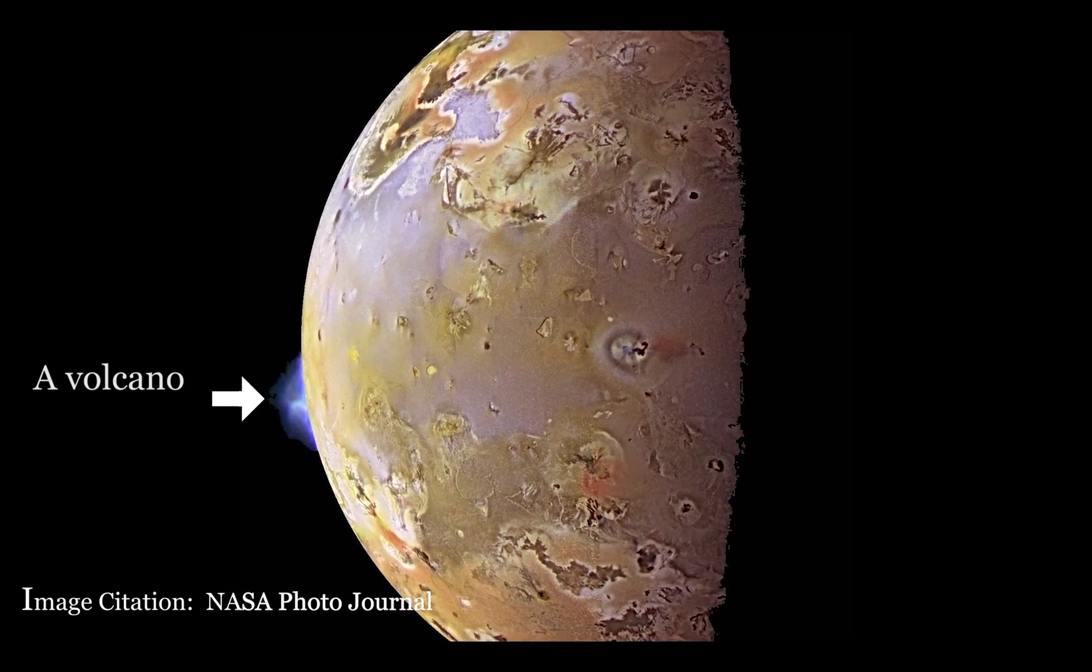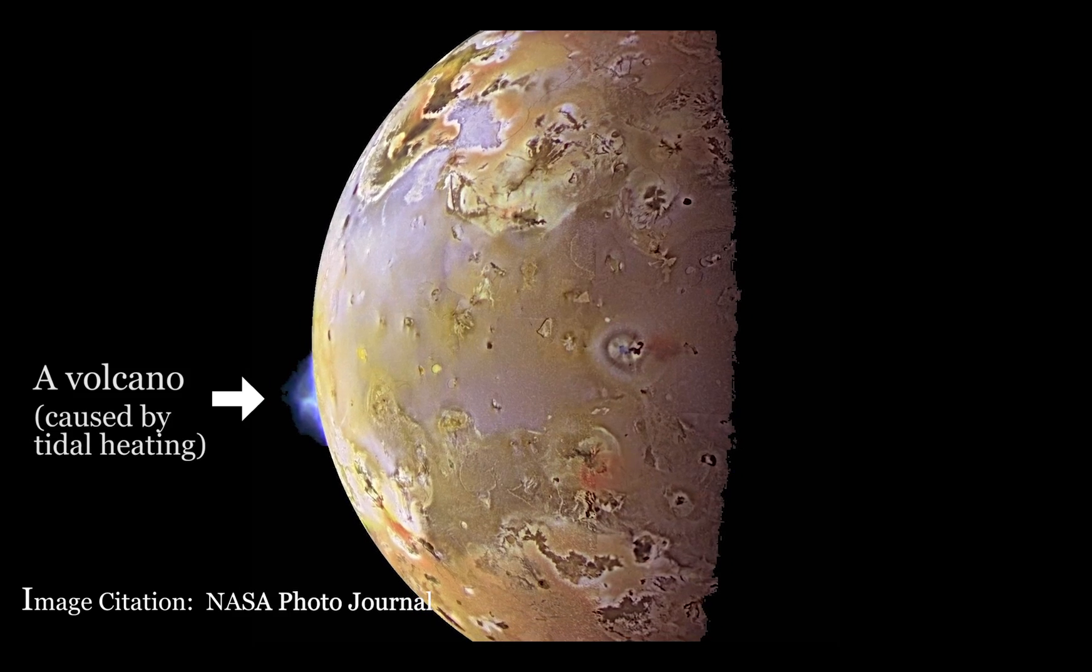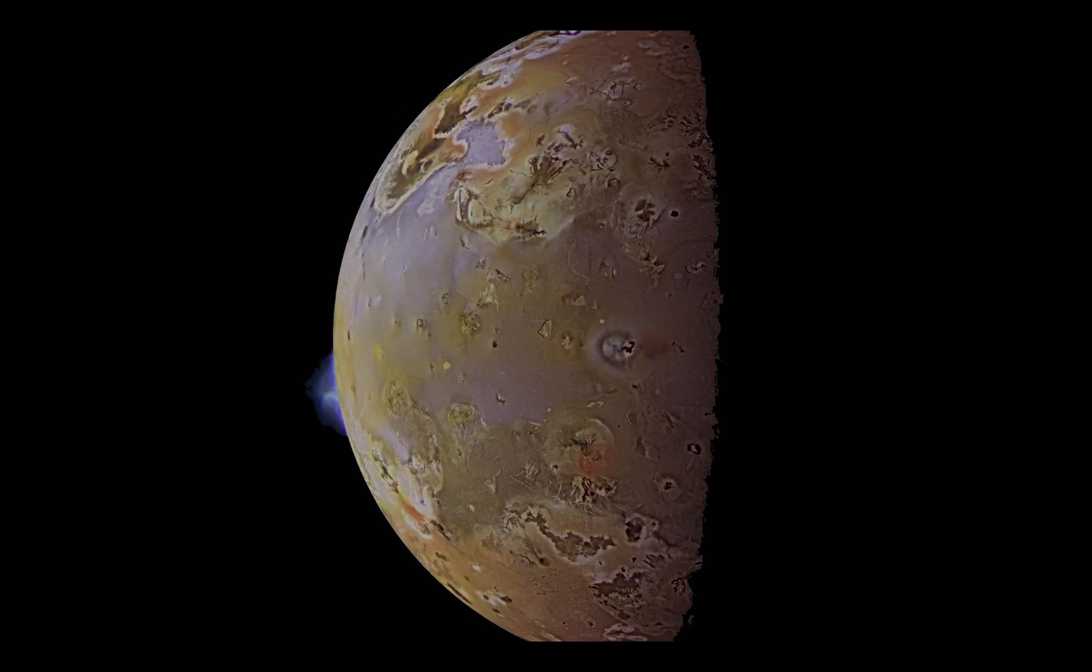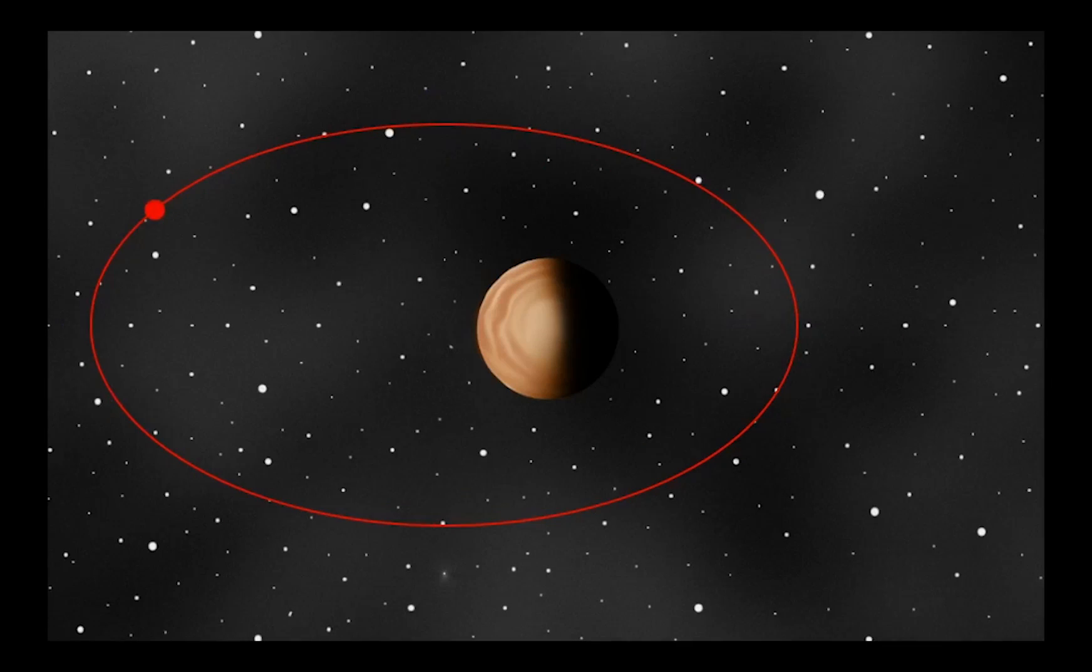Jupiter is an extremely massive planet and Io orbits in a small elliptical orbit, giving rise to the most active volcanism in the solar system. Let's look at a simulation useful for exploring Io's tidal forces.